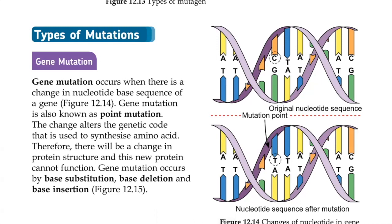The nitrogenous base has four types: A, T, G, and C. A will always pair with T and vice versa; C will always pair with G and vice versa — they must be complementary to each other. Gene mutation will happen when there is a change in the nucleotide base sequence of a gene.